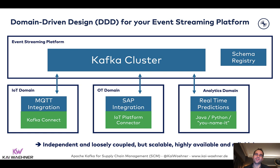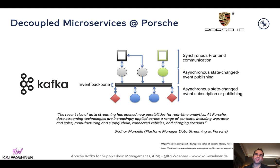One example of such decoupled microservices is used at Porsche. They have done great presentations on how they use supply chain optimization with Kafka — using asynchronous and decoupled communication between different systems with Kafka as the event backbone. One of the platform managers from Porsche says they're using this across a range of contexts, including warranty and sales, manufacturing and supply chain, connected vehicles and charging stations. This is really for end-to-end data correlation and visibility in real time at scale across all different parts of the supply chain. I've also added links so you can read the blog posts, talks, and podcasts from these companies.